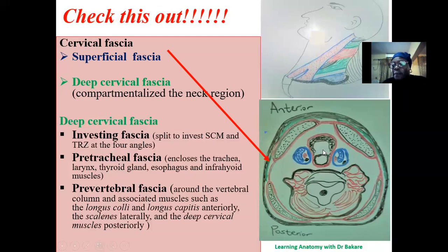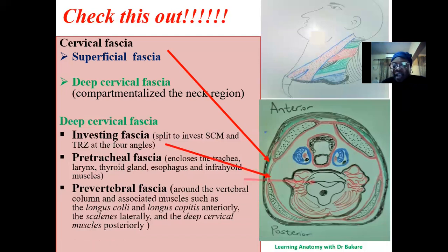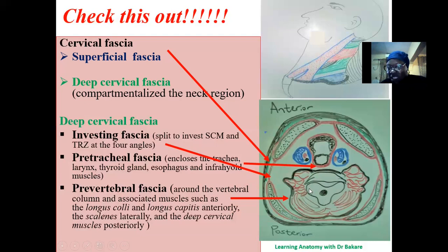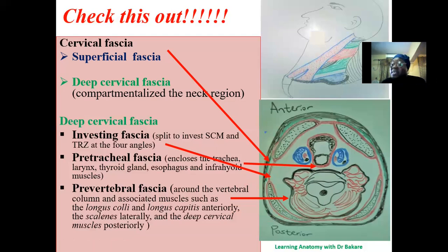The pre-tracheal fascia runs and encloses the trachea, the esophagus, and adjacent muscles around that region. The pre-vertebral fascia, from the name, encloses the vertebral column and muscles associated with it. All three subdivisions of the deep cervical fascia — investing fascia, pre-tracheal fascia, and pre-vertebral fascia — function to compartmentalize the structures within the cervical region, taking the name of the structure they enclose.